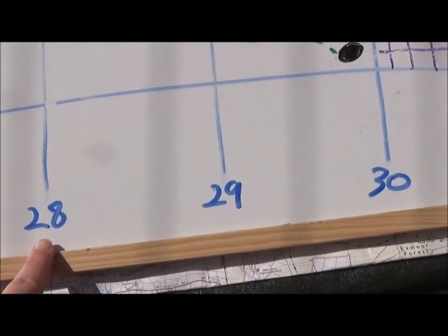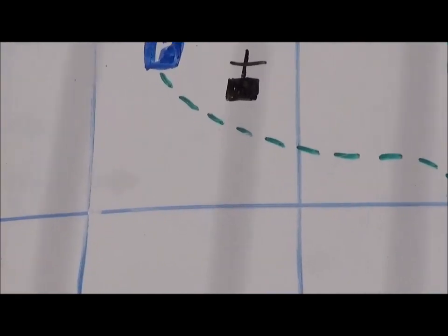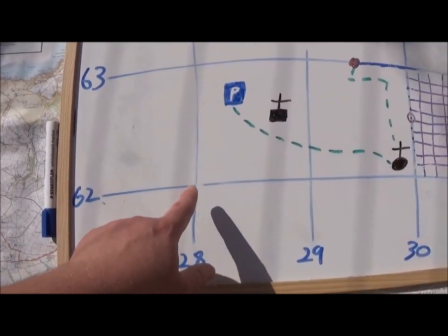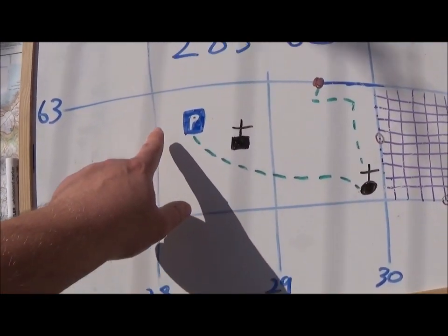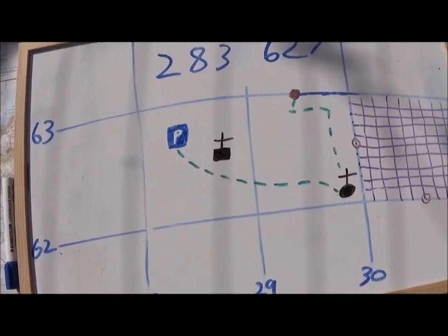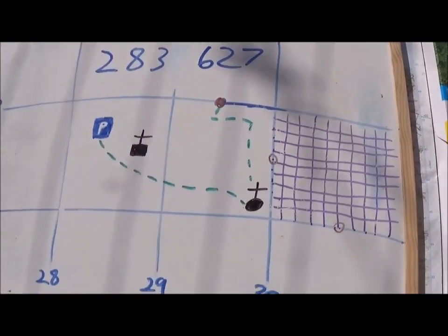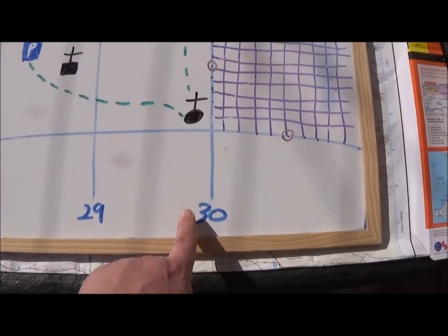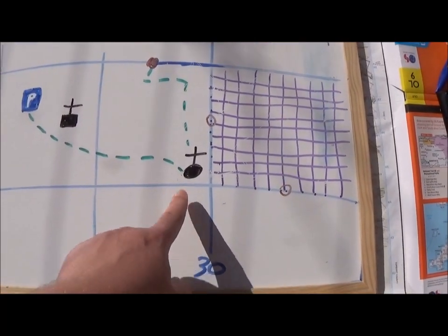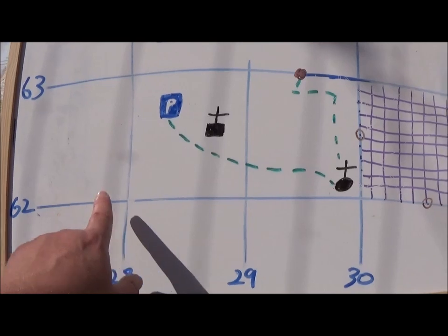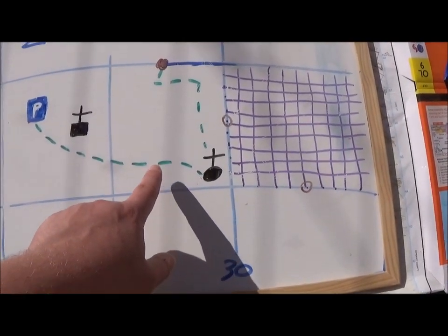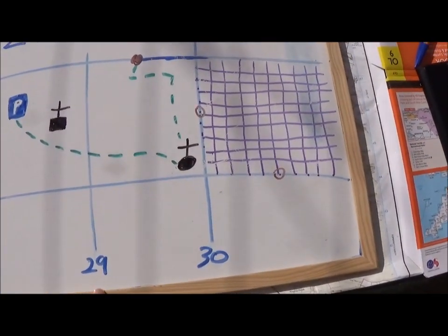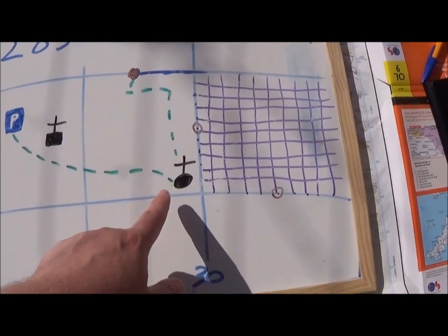So if we're going to do this one down here, we know it's 29. It's nearly to the end, so it will be 299. And we're still on the same square, so it'll be 62. And then there's up one, so 621. So we would write that 299, 621.